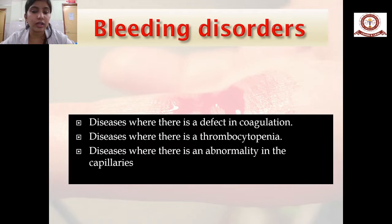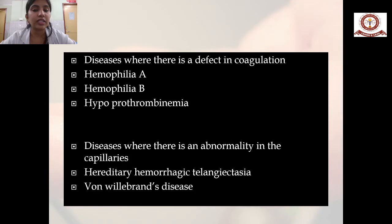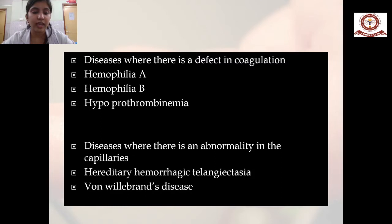Bleeding disorders can be due to a defect in the coagulation mechanism, a defect in the platelet — either reduced platelet count known as thrombocytopenia — or abnormalities in the capillary. Defects in coagulation mechanism include Haemophilia A, Haemophilia B, or hypoprothrombinemia, whereas capillary abnormalities include hereditary hemorrhagic telangiectasia and Von Willebrand disease.